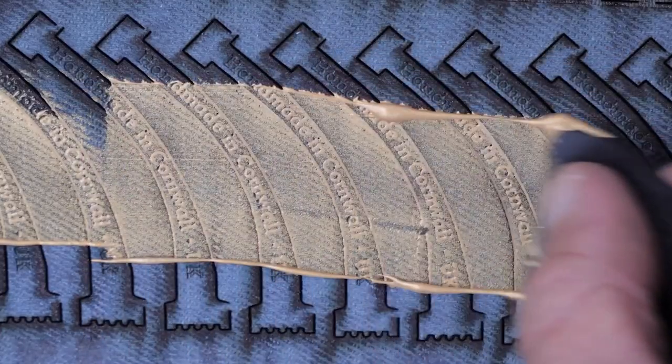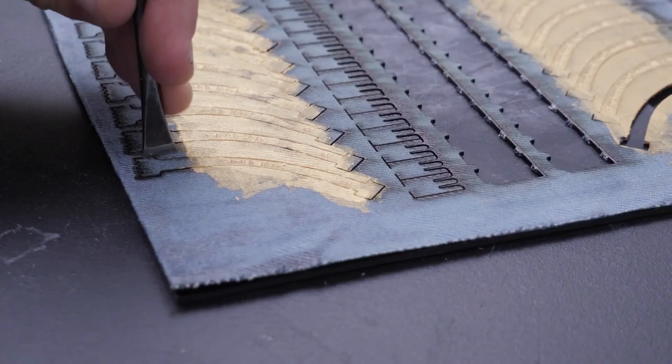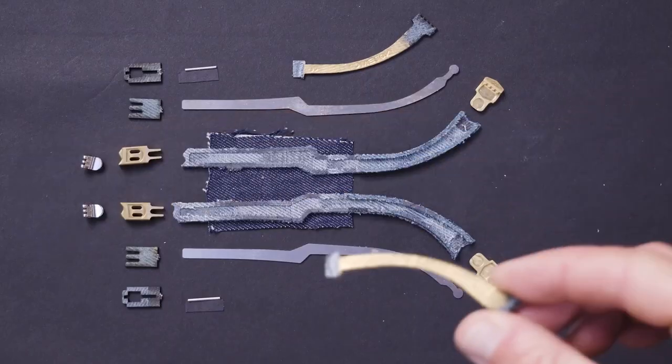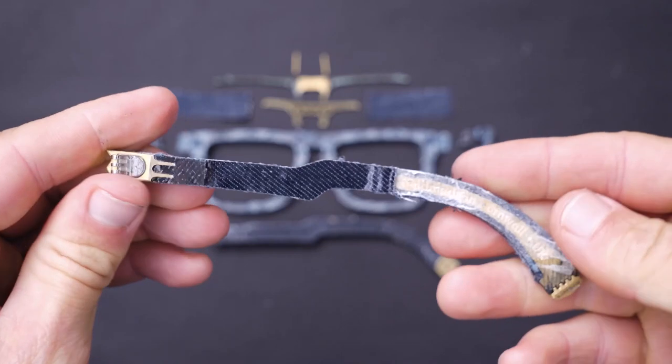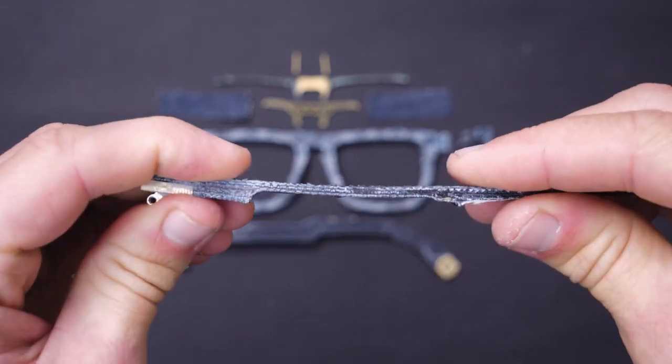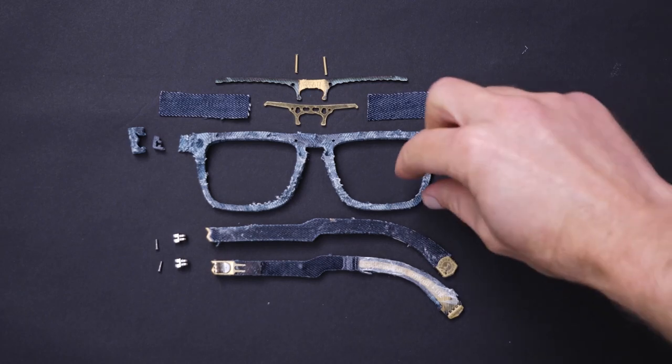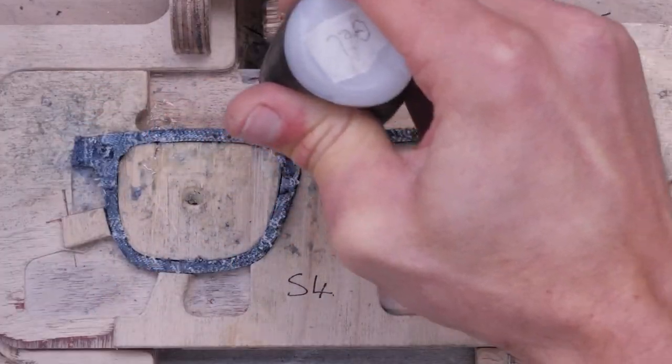I rub gold ink into the engraving so that it stands out. I made this video a few years ago, so some of the details of my process have changed quite a bit since then, especially the way I assemble the parts of the temple arms. So I've cut out that whole section and will concentrate on the frame fronts. The way I make them hasn't changed as much.